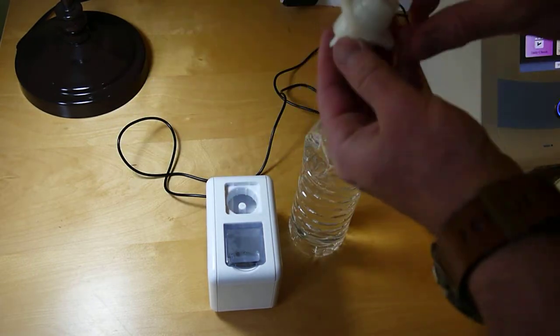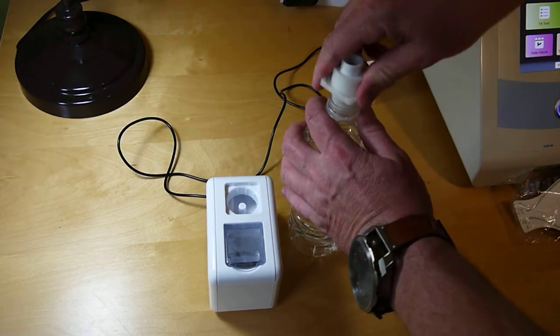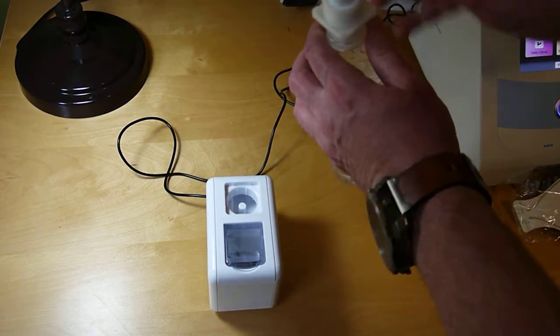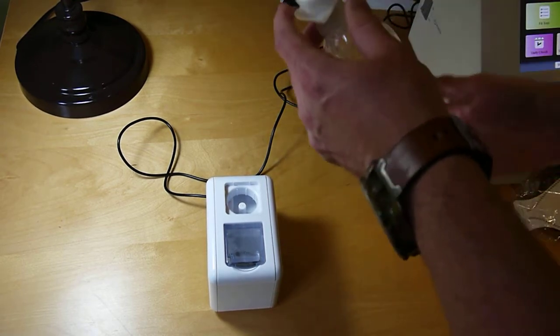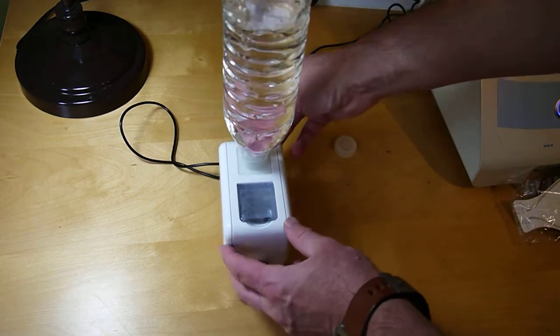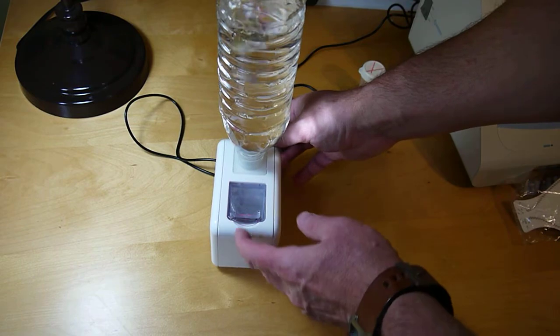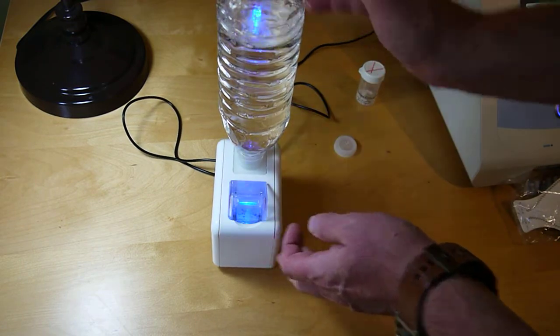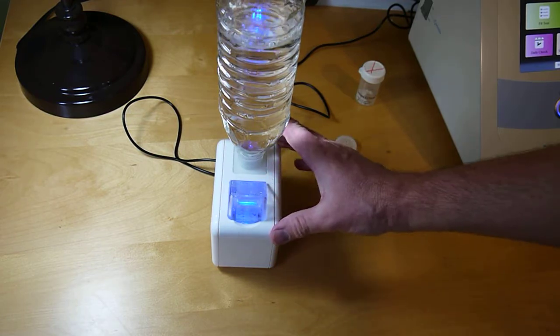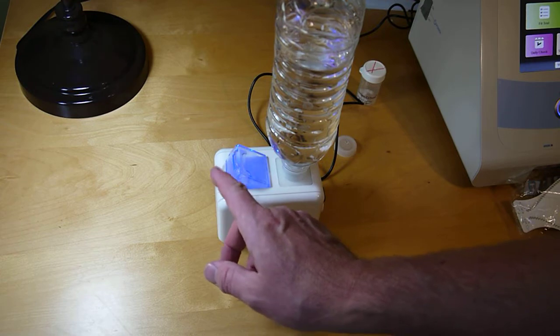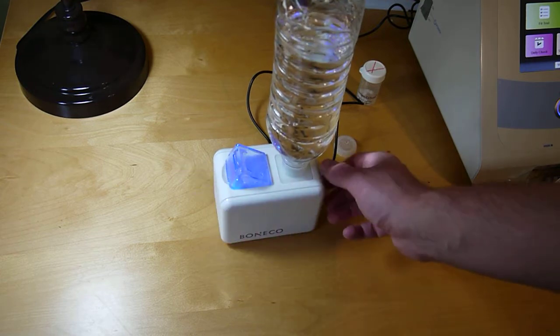Take this top and put that on. There's a little check valve that will keep it from leaking out. Just pop this on top and lift this up. You may have to give it a couple of seconds to get going, but you should see a stream of vapor coming out the front of it.